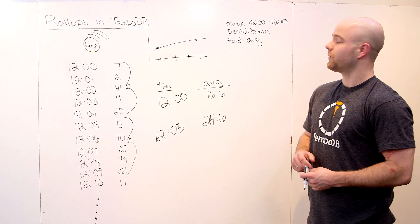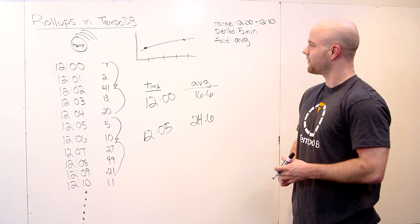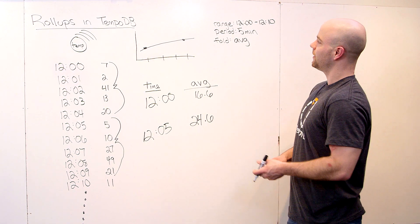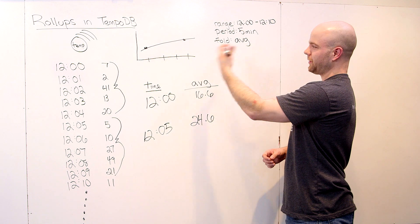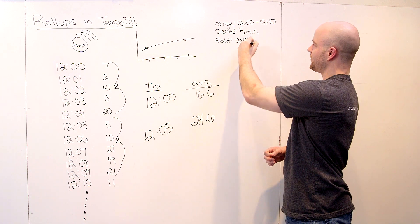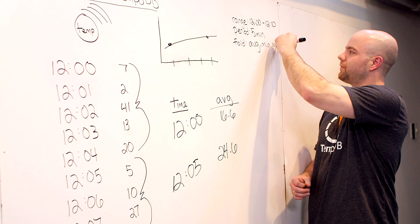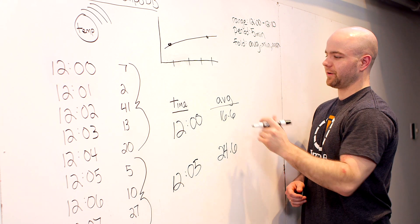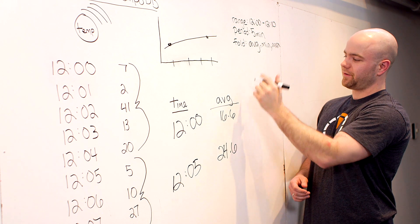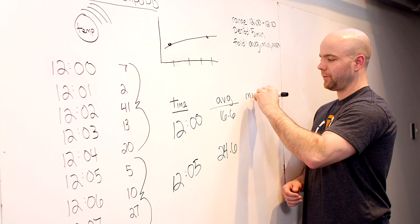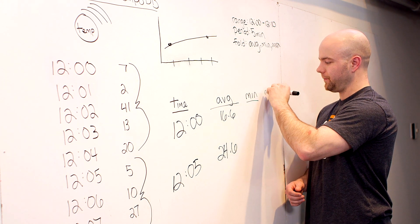And one other really cool thing that TempoDB allows is you can do multiple analysis functions in one API call. So let's say we were doing a more comprehensive chart and we wanted not just the average, but say the five-minute mins and max values of this time series. So all the TempoDB API will give you back is two extra columns in your return for the min and the max.